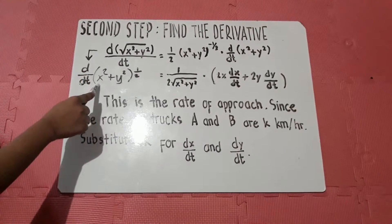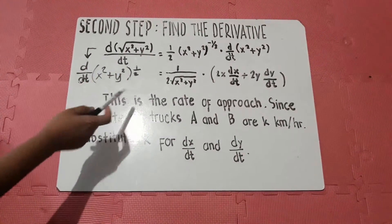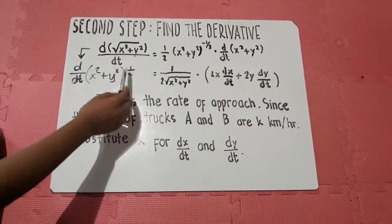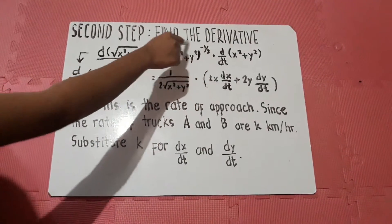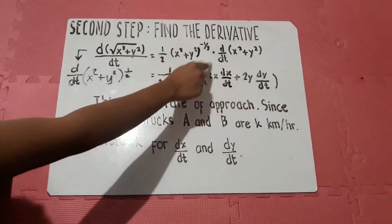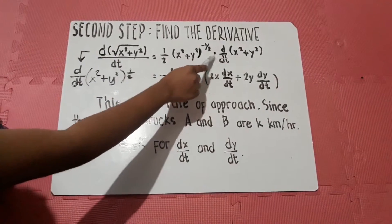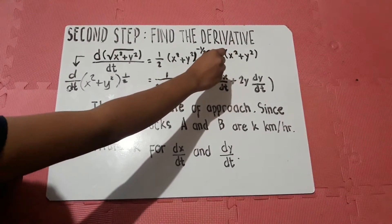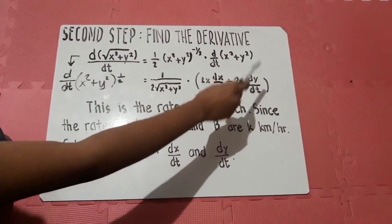We differentiate the quantity x-squared plus y-squared to the power of one-half with respect to t. Since it is a chain rule, we need to get the derivative of the outside and the derivative of the inside. For the outside derivative: one-half times one is one-half, and one-half minus one equals negative one-half. So the derivative of the outside is one-half times x-squared plus y-squared to the power of negative one-half. For the inside derivative, we differentiate x-squared plus y-squared: distributing gives 2x dx over dt plus 2y dy over dt.